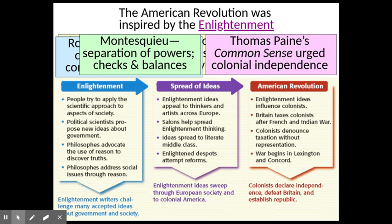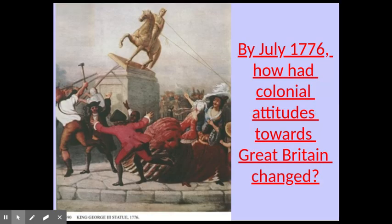The American Revolution was most definitely inspired by the Enlightenment. Montesquieu gave us the idea of separation of powers and the checks and balances system that we would incorporate in our early government. Thomas Paine gave us a pamphlet called Common Sense, where he urged colonial independence from Great Britain in very simplistic tones — something the common farmer could understand. He asked: how does it make sense that an island 3,000 miles away should run a continent?